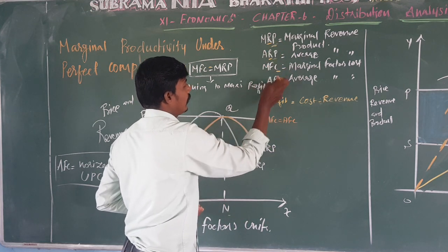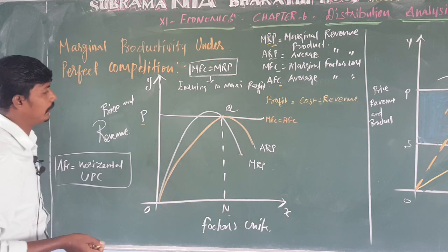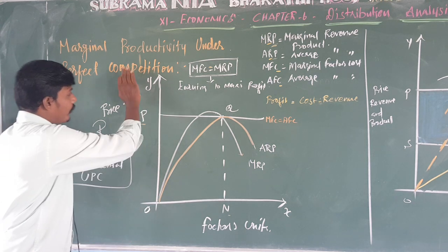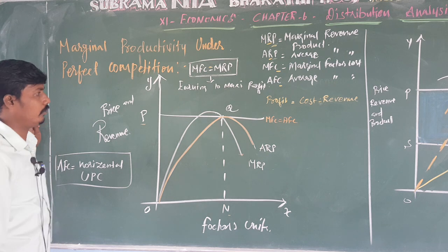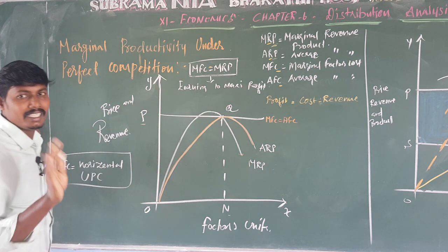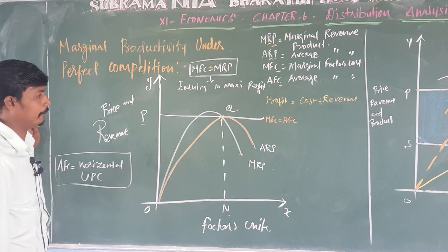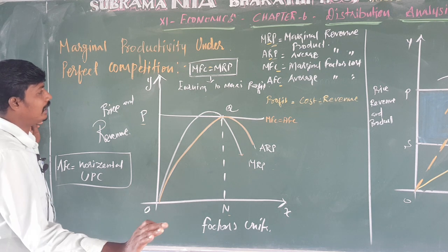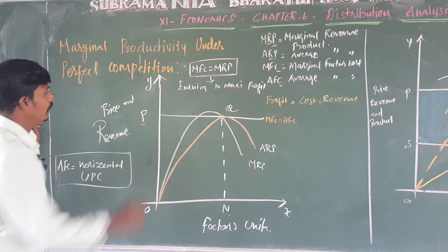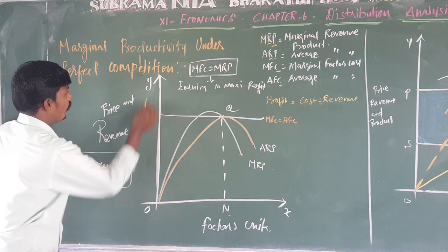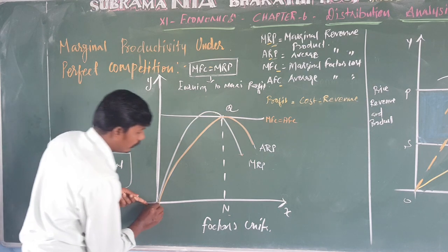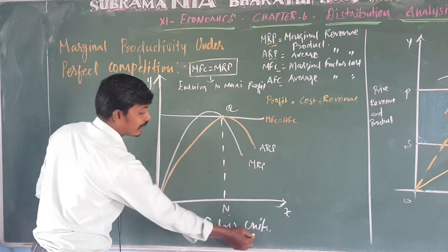Under the perfect condition, I will explain the diagram. The Y-axis represents price and revenue. The second one, the X-axis, represents factor units.